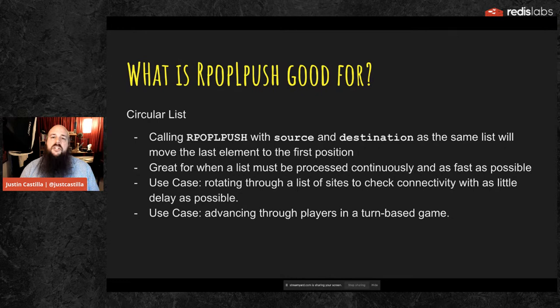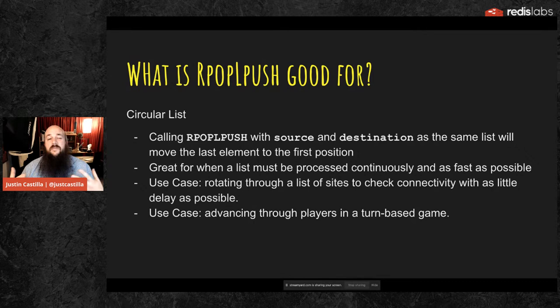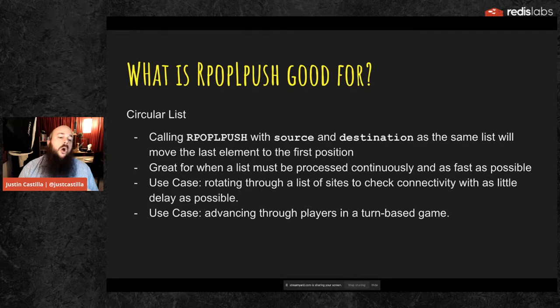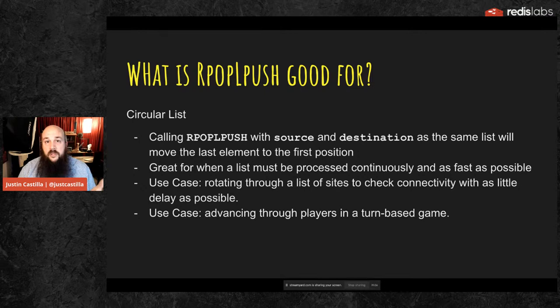What is RPOPLPUSH good for? Well, for building queues — specifically a reliable queue. A queue is unreliable at the moment between the producer's pop and the consumer's push commands. RPOPLPUSH removes the element from the producer queue and adds it to the consumer queue in one command, eliminating the opportunity for failure or loss of data. Also, the circular list: calling RPOPLPUSH with source and destination as the same list moves the last element to the first position, creating a circular motion.